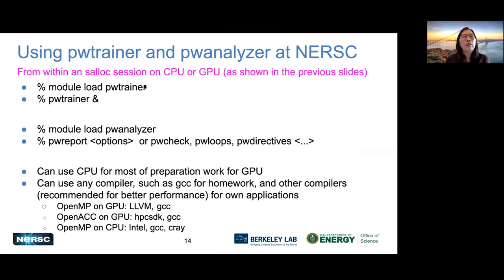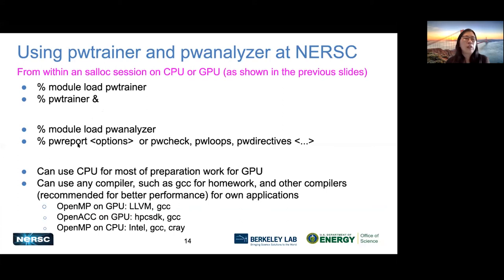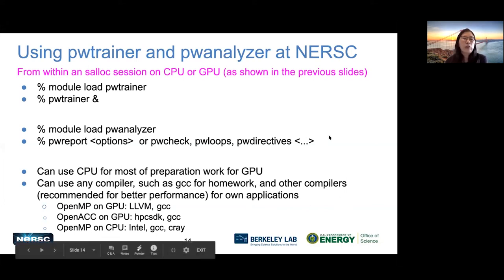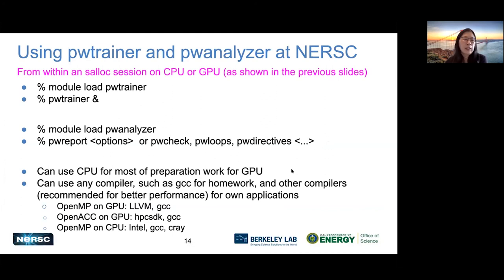After knowing how to use different compilers, here's how to use the PW Trainer and PW Analyzer tools. We already set up a module and license files — you don't need to download or install anything. All you need is module load PW Trainer and launch the GUI, or module load PW Analyzer and use command-line options: PW report, PW check, and a few others. You can use CPU for most preparation work for your GPU and you can use any compiler. Training slides show GCC for homework, but we recommend other compilers for better performance: LLVM for GPU OpenMP, HPC SDK for GPU OpenACC, and Intel or others for CPU OpenMP.